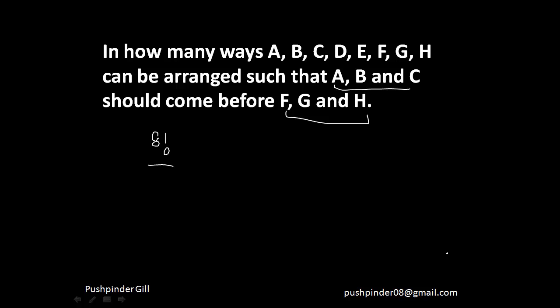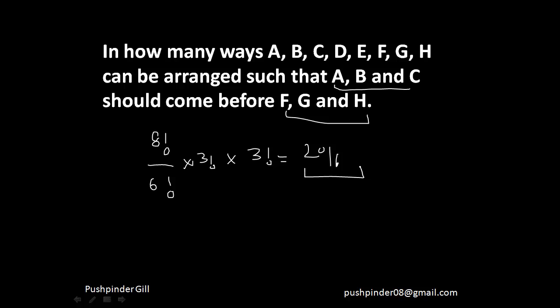With all 6 assumed identical, we get 8 factorial by 6 factorial. However, A, B, C can interchange among themselves in 3 factorial ways, and F, G, H can arrange themselves in 3 factorial ways. So the total number of ways is 8 factorial divided by 6 factorial, times 3 factorial times 3 factorial, which gives 2016 ways. The total arrangements are 8 factorial; we assume 6 things to be identical giving 8 factorial by 6 factorial, then multiply back by 3 factorial twice for each group's internal arrangements.